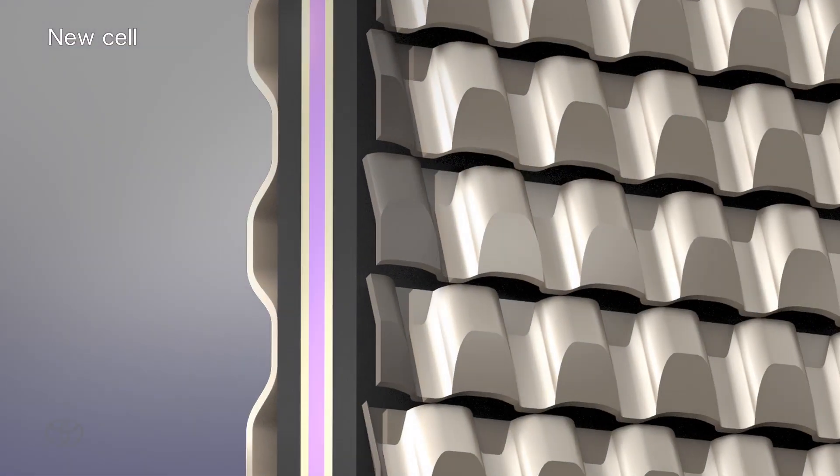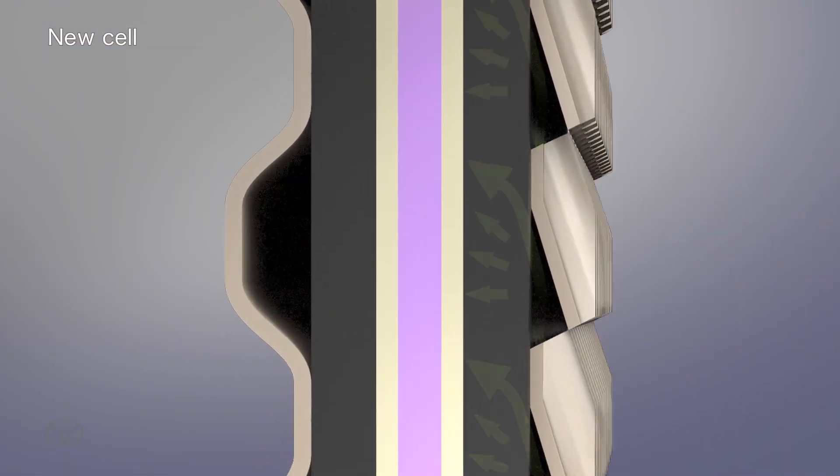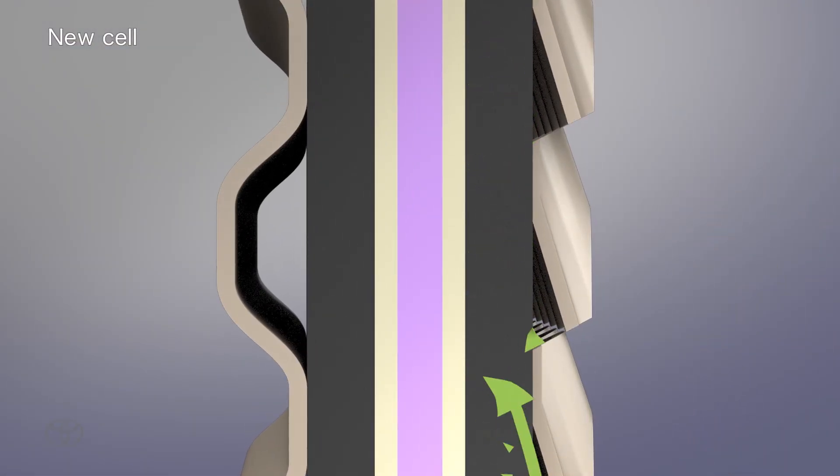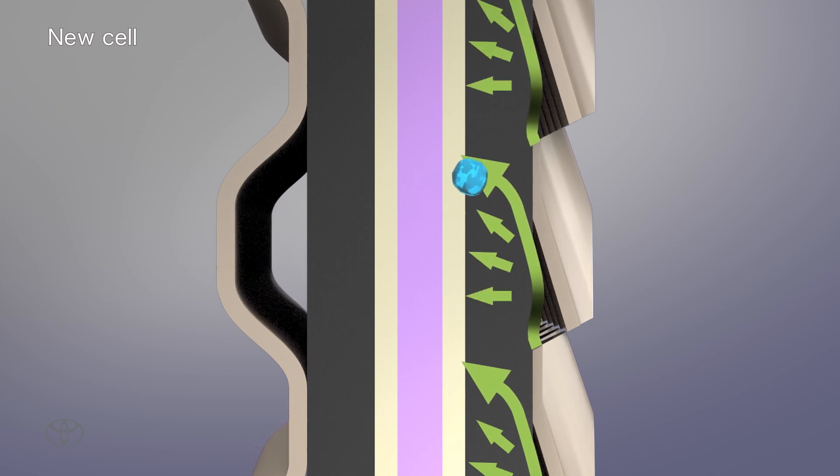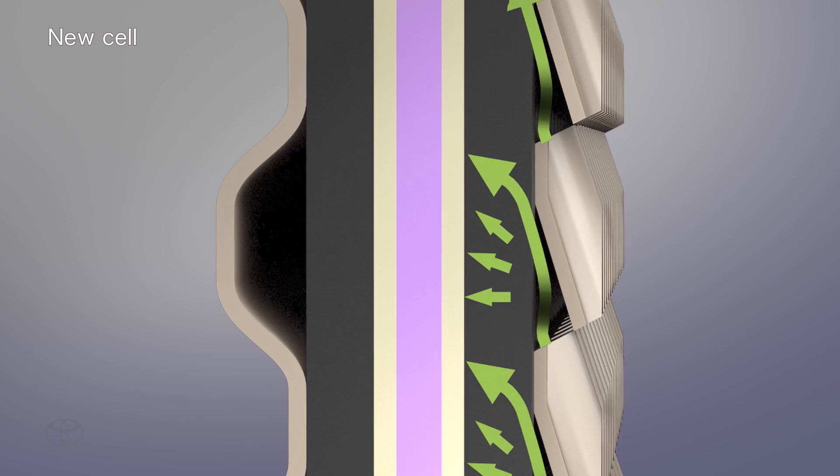The 3D fine mesh flow field provides an even supply of air onto the surface of the cells, while smoothly expelling the water resulting from electricity generation, thereby preventing water accumulation.